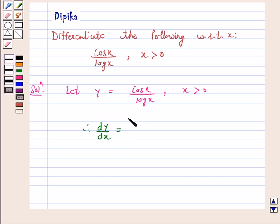Log x into derivative of cos x, that is minus sin x, minus cos x into derivative of log x, that is 1 over x, upon log x whole square.